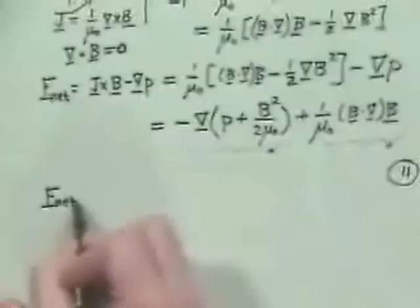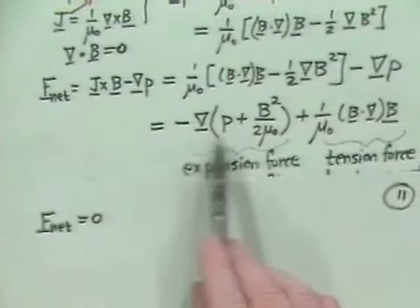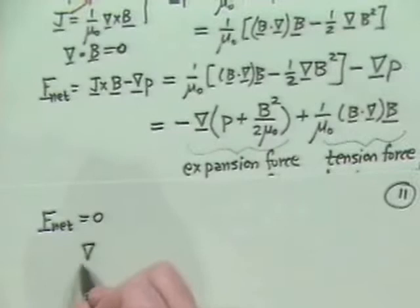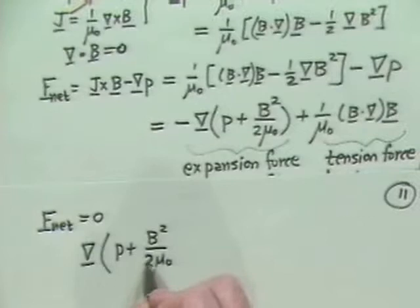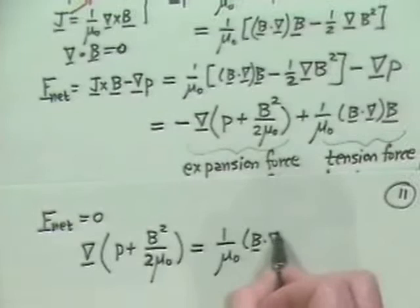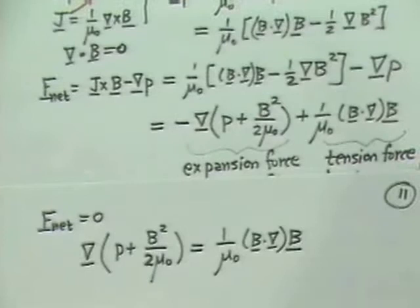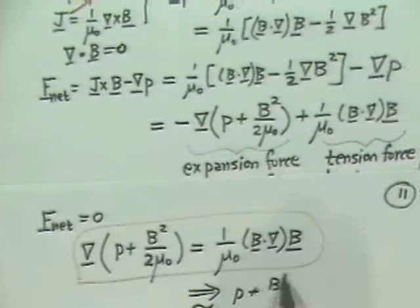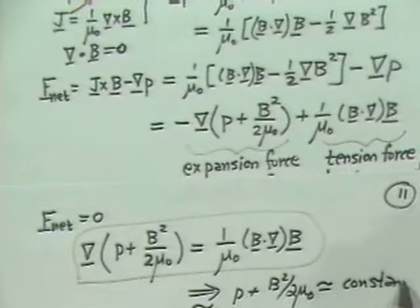So let's go a little further. If we want the net force to be equal to zero, then we want to take this expansion force and balance it with the tension force. So what that gives us is that the gradient of P plus B squared over 2 mu naught has to be equal to 1 over mu naught times B dot del B.